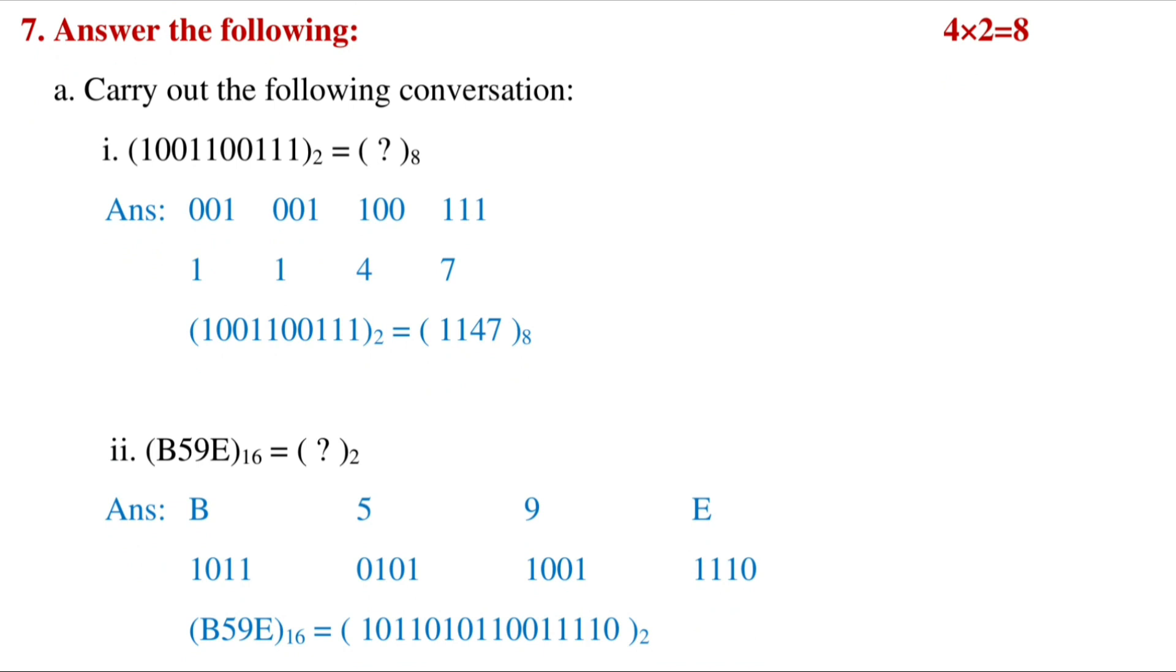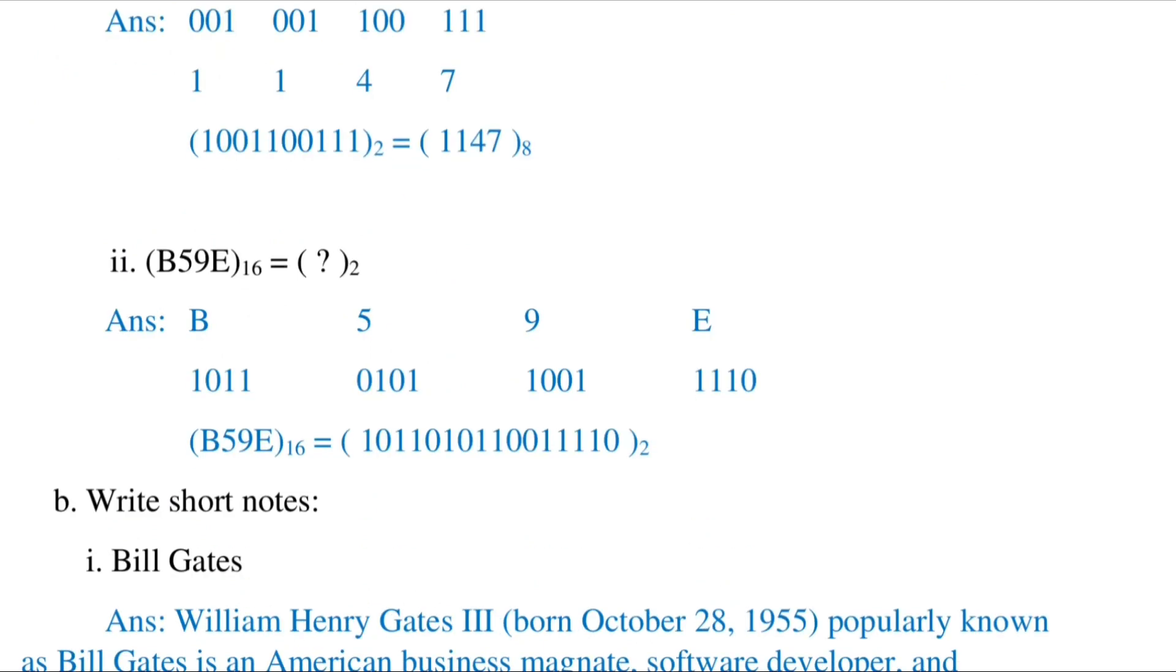Again, here from 16 to 2, that means convert from hexadecimal into binary. So first we'll write all the digits separately, and after that we'll convert this number into binary. Like B's equivalent is 11, so if we convert 11 into binary, we'll get the answer as 1011, and so on. Like that we will convert all the numbers, and E's equivalent will be 14. At last we'll get the final number as this one.